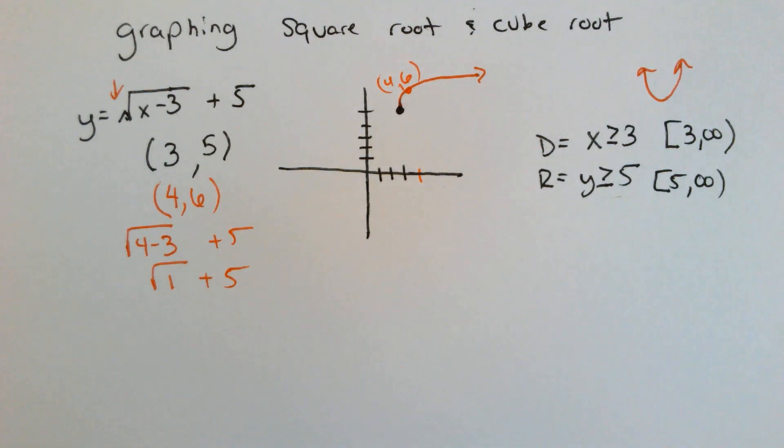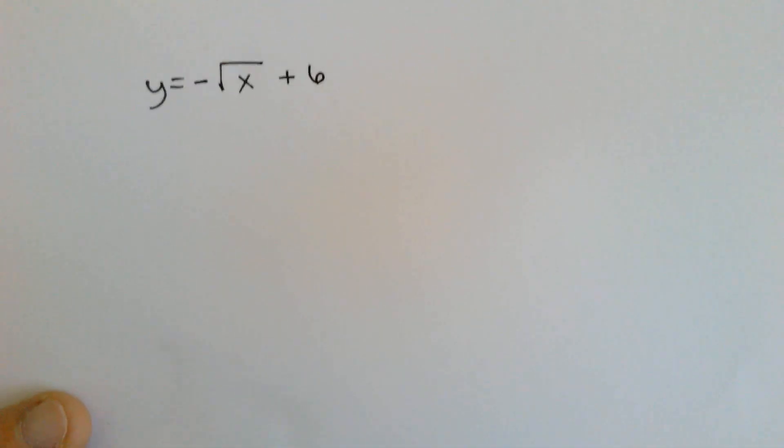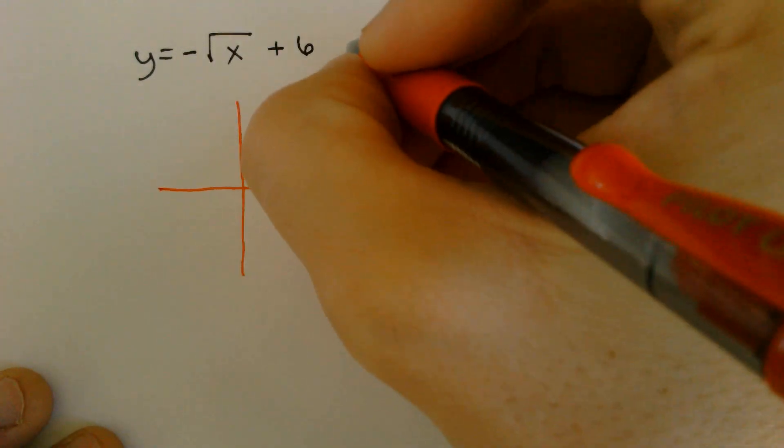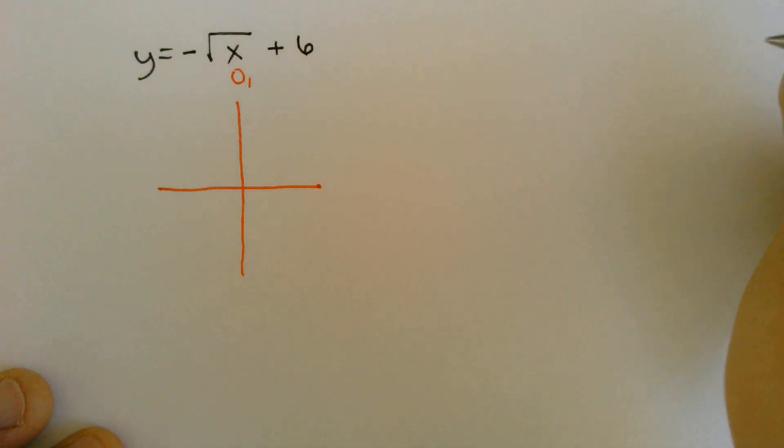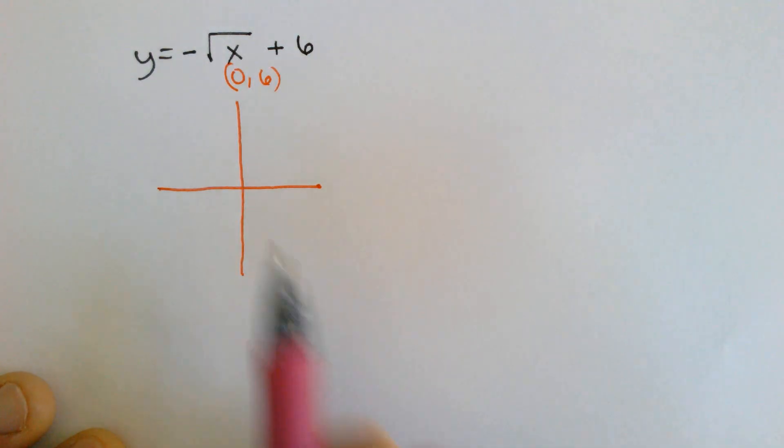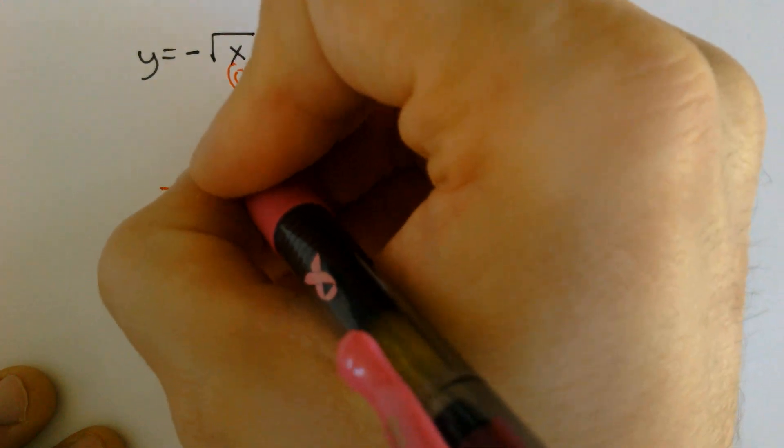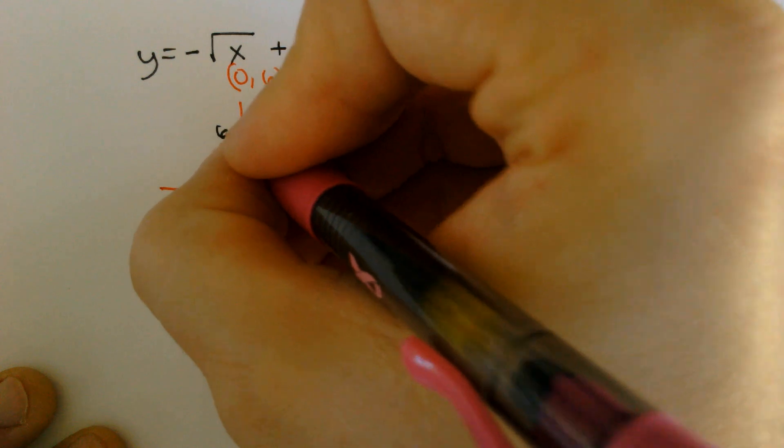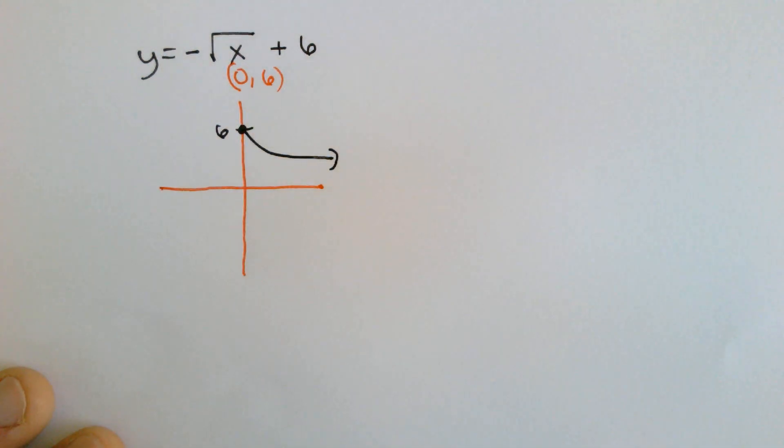Let's do another one. Let's say we had y is equal to the negative square root of x plus 6. So this graph, change the sign, keep the sign, there's nothing to change, would be 0 comma 6. It also is negative, so that's going to influence our graph as well. I'm going to plot the point at 0 comma 6. Because it's negative, instead of curving up, it is going to curve down. And everything else kind of remains the same.